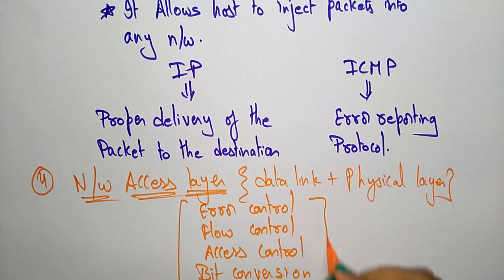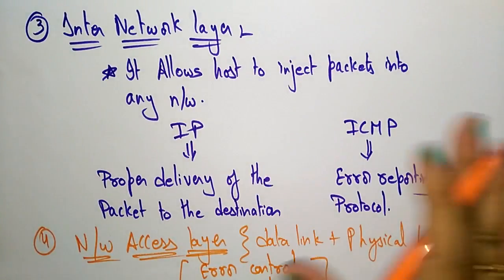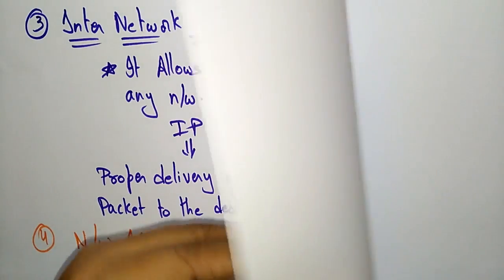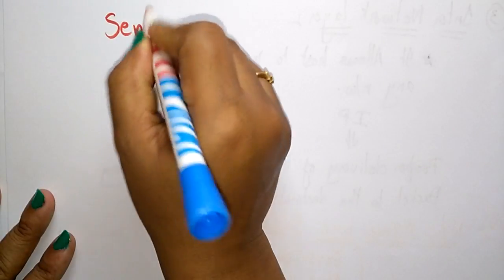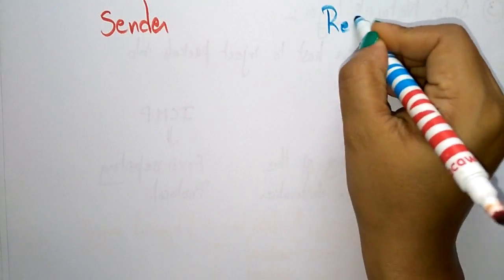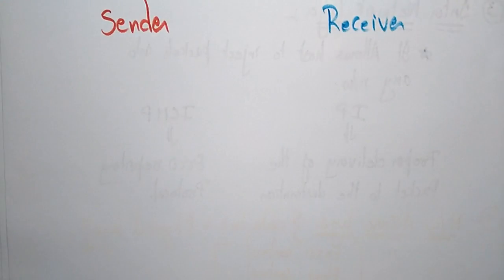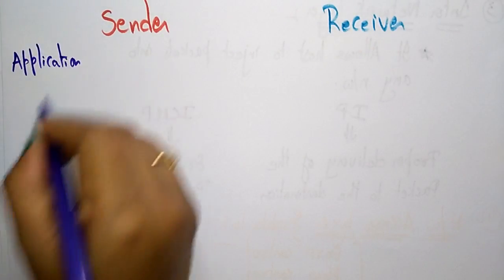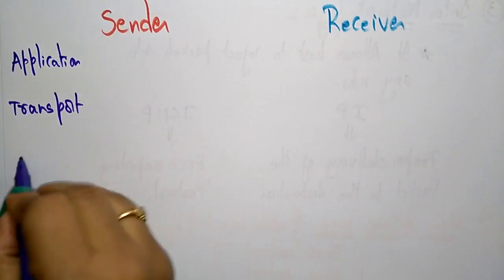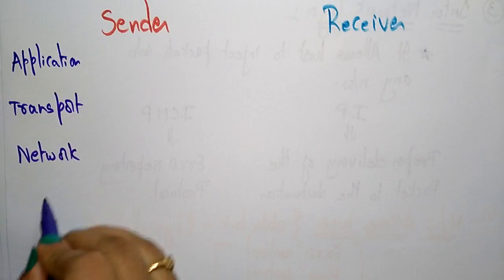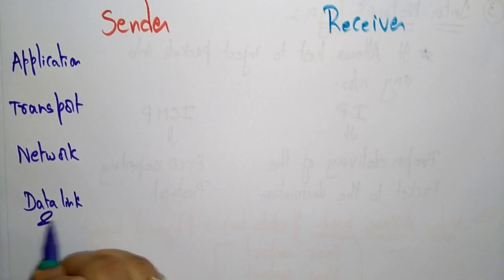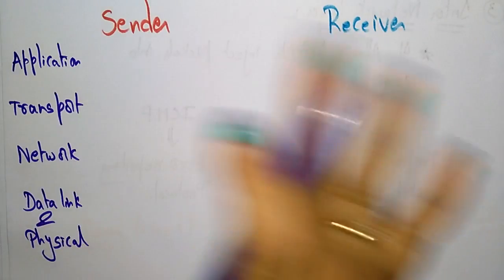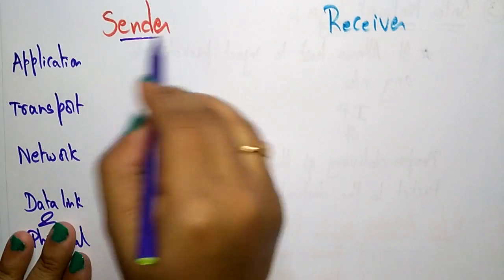Those are the remaining layers present in the TCP/IP reference model. Let me give a simple explanation of the TCP/IP model. Suppose here we have a sender and a receiver. On the sender side we have: application, transport, inter-network, and data link and physical layers.